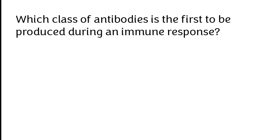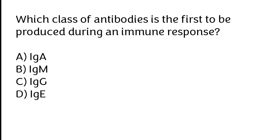Which class of antibodies is the first to be produced during an immune response? IgA, IgM, IgG, IgE. The correct answer is option B. IgM is the class of antibodies first to be produced during an immune response.